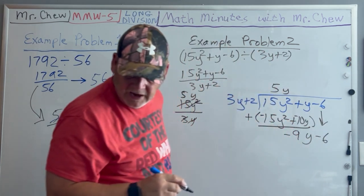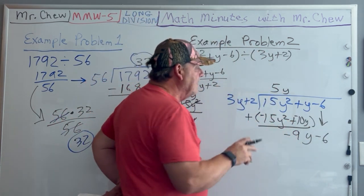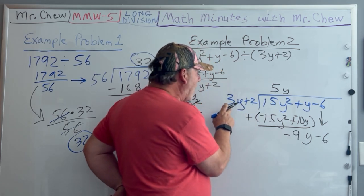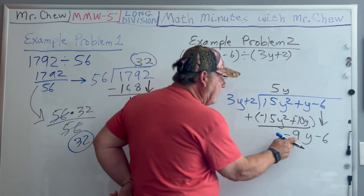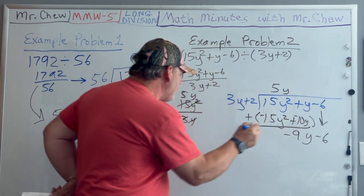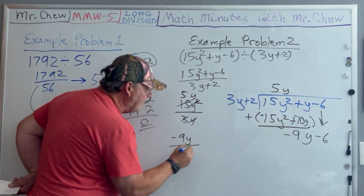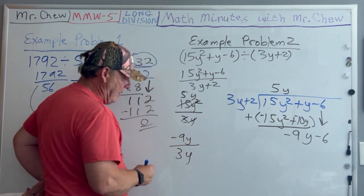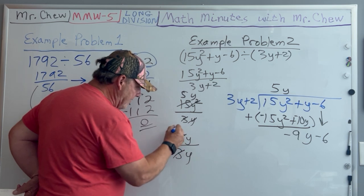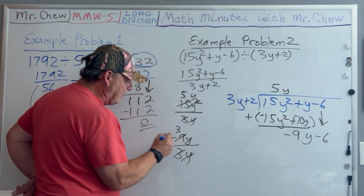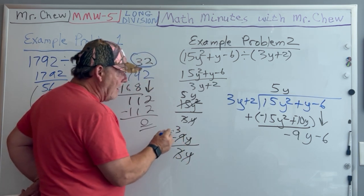After I bring down the -6, now I'm going to say, what do I multiply 3y by to get -9y? If you don't know, take -9y and divide by 3y. The 3's cancel and the y's cancel, so it's just -3.